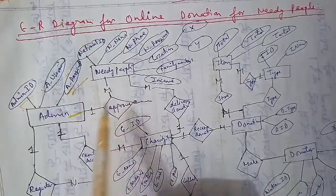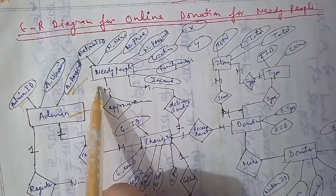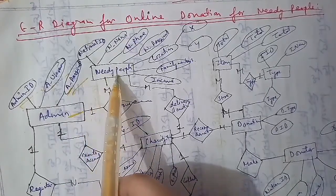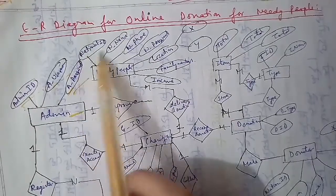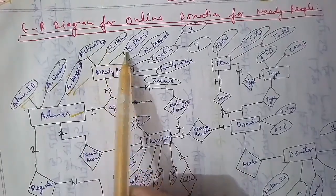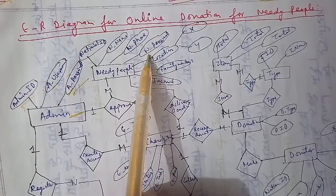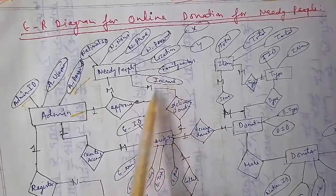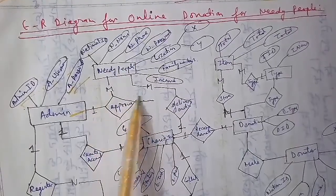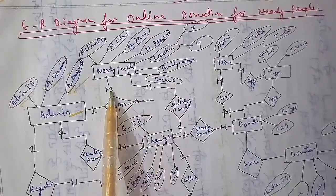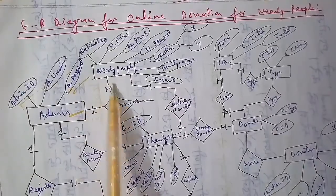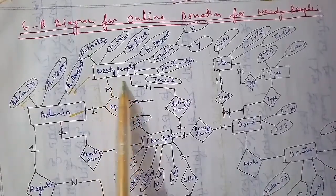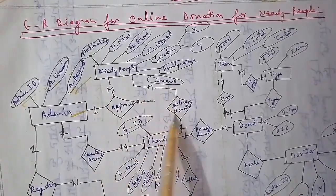The admin needs to confirm whether the person is genuinely a needy person. The needy person entity has the national ID, national name, national phone number, password, location, family members, and the income they are earning. The admin reviews all of this information about the needy people before approving them. Needy people are connected to the donation delivery process.